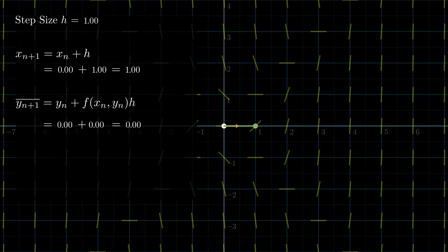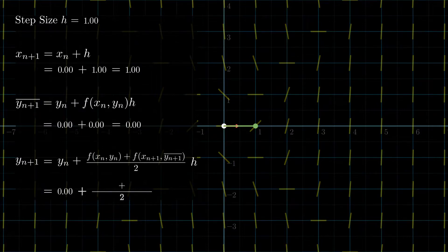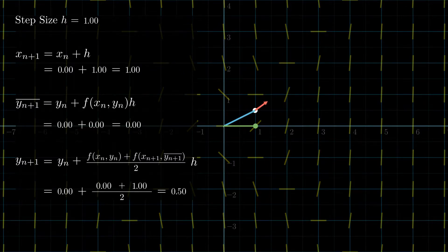Here's where RK method differs. Instead of just extending a line with a given slope, we take the average of the slopes at the nth point and at the point calculated using Euler's method and use this slope to extend the line.